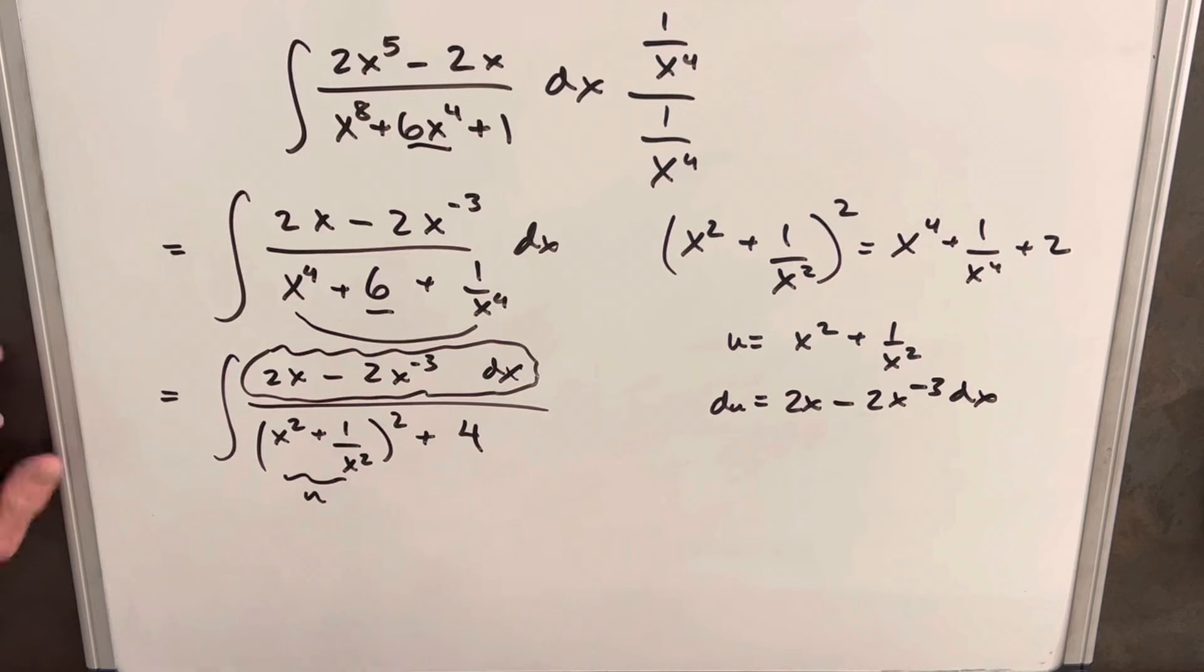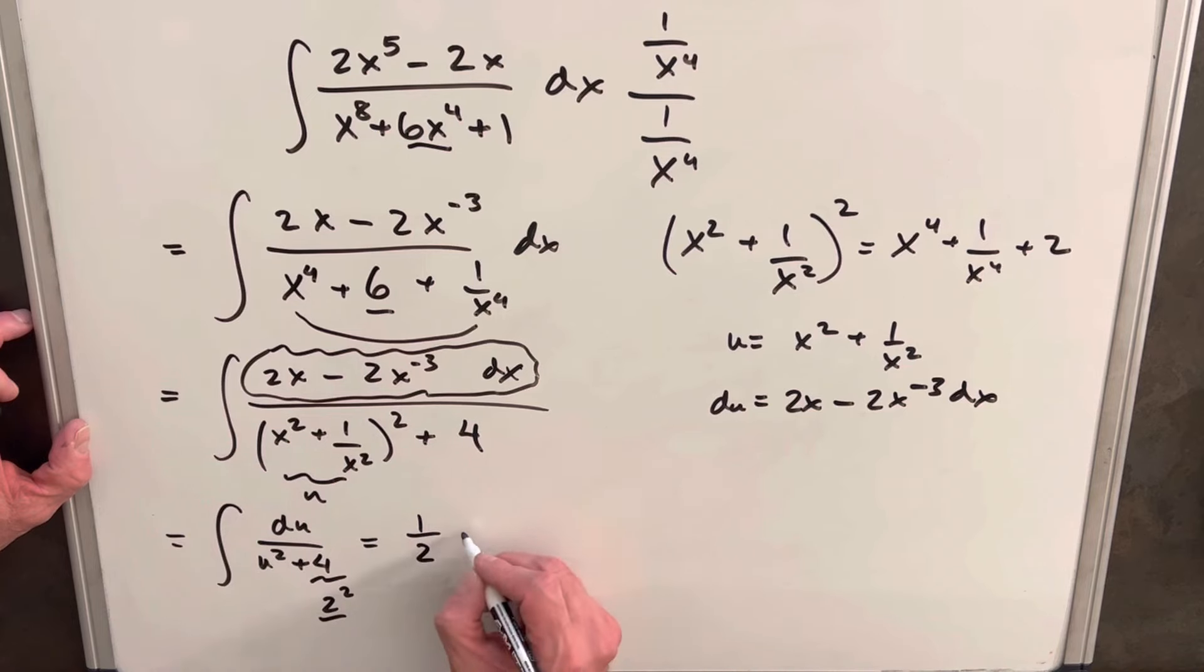Okay, so let's make the substitution. We're going to have just du over u squared plus 4. And notice 4 is just 2 squared. So then we can just use our formula for integrals of this form, which is going to be 1 over a, whatever that is. That's going to be this 2. So we're going to have 1 over 2, tan inverse, our u over this value, our 2 again. Plus c.